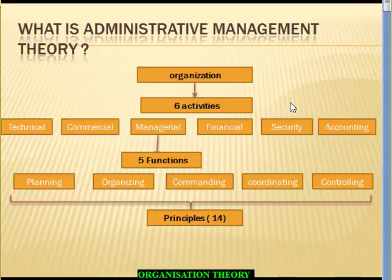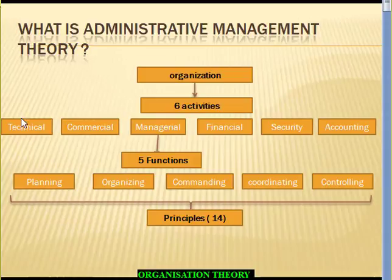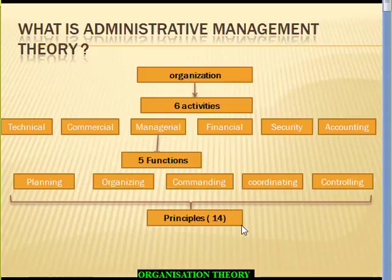In a nutshell, this theory says that every organization has six main activities: technical, commercial, managerial, and financial, among others. Among all six activities, managerial activity is the most important — it determines the success of the other five. This activity consists of five functions: planning, organizing, commanding, coordinating, and controlling. All five functions can be performed effectively by following 14 principles. So the whole theory can be summarized under six activities, five functions, and 14 principles, all aiming at making the organization efficient and effective.